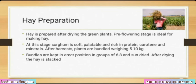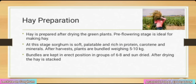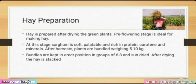Hay preparation: hay is prepared after drying the green plants. Pre-flowering stage is ideal for making hay — at this stage sorghum is soft, palatable and rich in protein, carotene and minerals. After harvest, plants are bundled in 5–10 kg bundles, kept in erect position in groups of 6–8 and sun-dried. After drying, the hay is stacked.